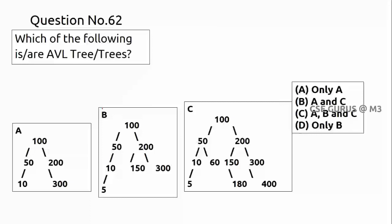Question number 62 is about AVL trees. AVL trees are balanced binary search trees where the absolute difference between the heights of the left and right subtrees should not exceed one — and this condition must hold for every subtree as well.